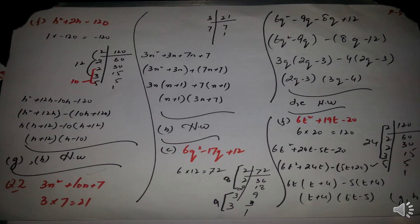Part h: h² + 2h - 120. The coefficient of the highest power is 1, multiplied by minus 120. Taking the LCM of 120: using the black marker 2 × 2 × 3 gives 12, and with the red marker 2 × 5 gives 10. We split 2h into plus 12h minus 10h — the larger value 12 takes the positive sign from 2, and 10 takes the minus sign. First and second in one bracket, third and fourth in the other — the minus outside changes the sign of 120 from minus to plus inside the bracket. Taking h common from the first bracket and minus 10 from the second, the factors are (h + 12)(h − 10). Part g and h are your homework.